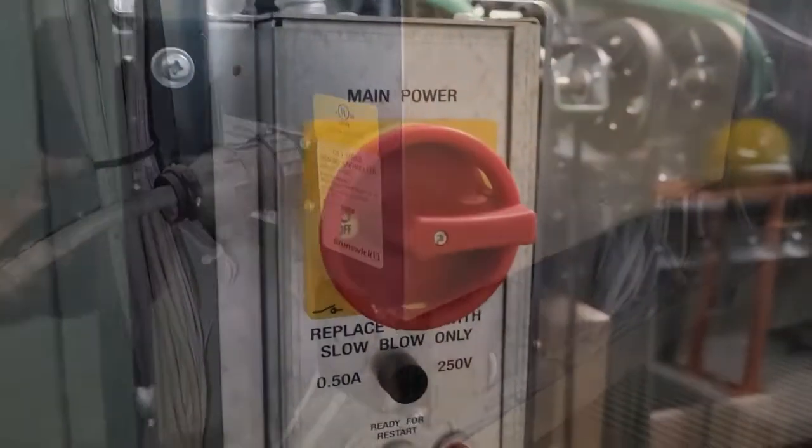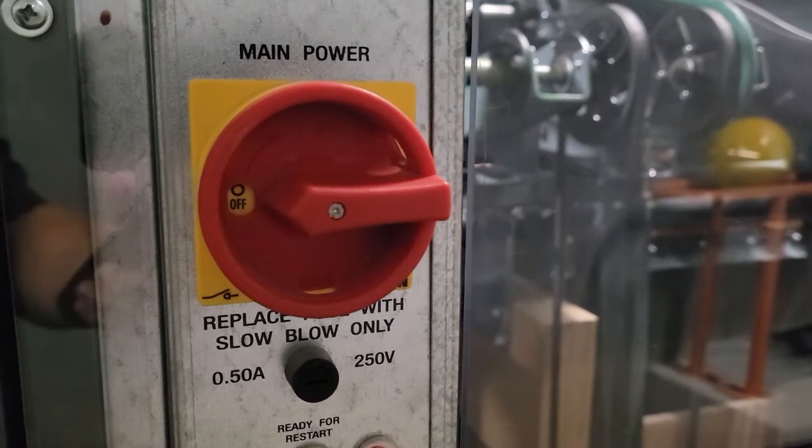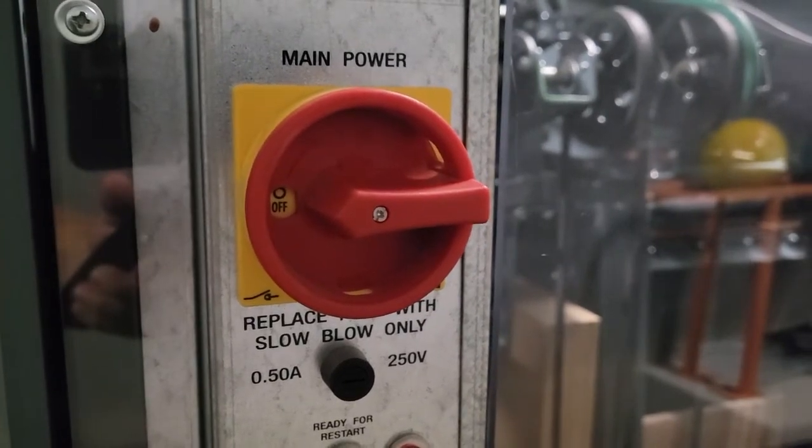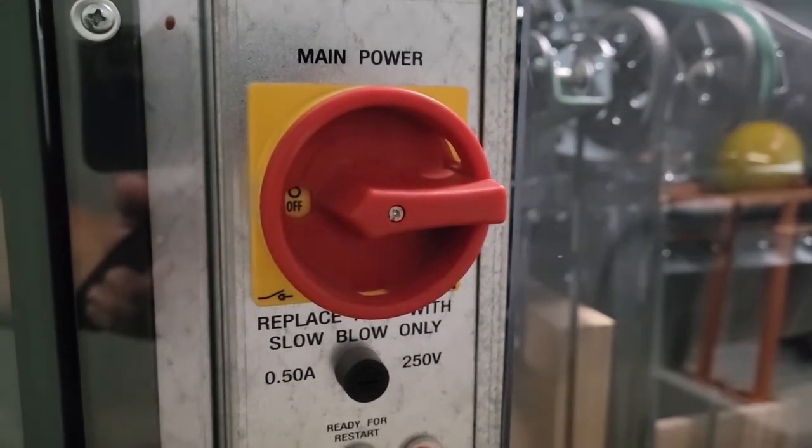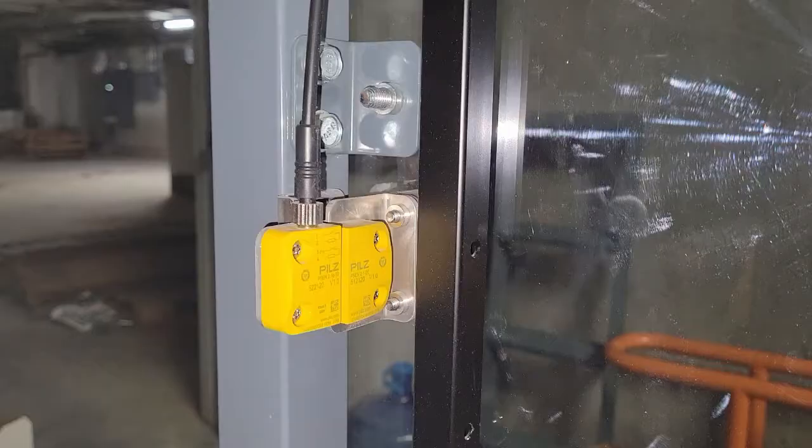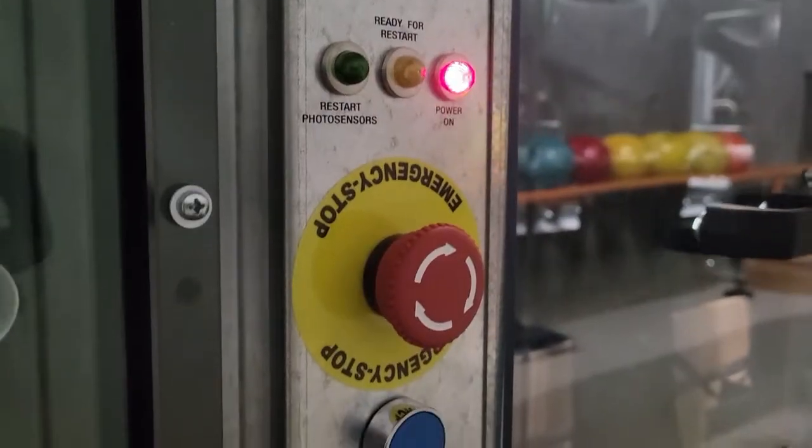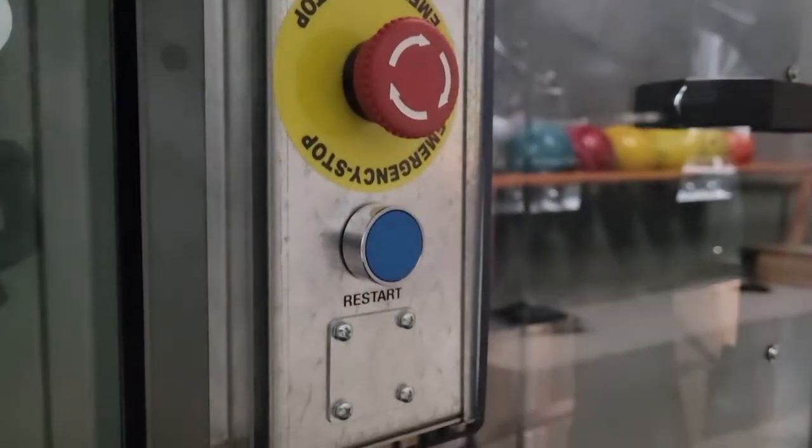Let's go over the power procedure when the safety controller's main power switch is in the off position. Before turning the main power switch on, we need to make sure the masking unit photosensor is clear of any obstruction, the rear door interlocks are closed and latched, and lastly, confirm that the emergency stop button is not pressed in.